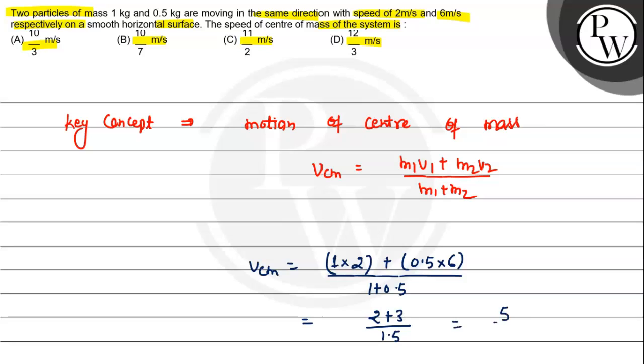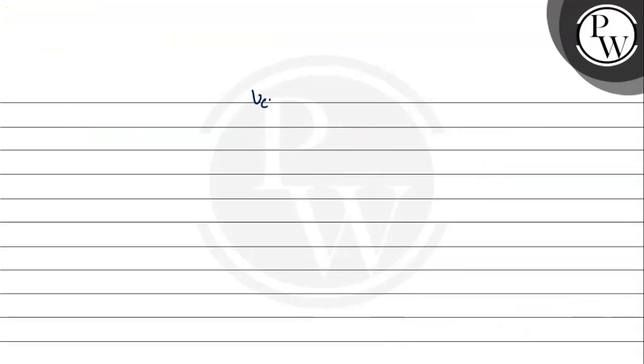This equals 5 upon 1.5. We can write this as 50/15. Dividing, this becomes 10/3 m/s. This is the velocity of center of mass: 10 by 3 meter per second.